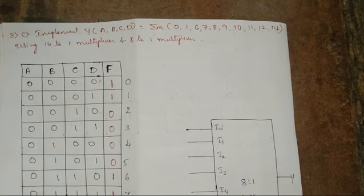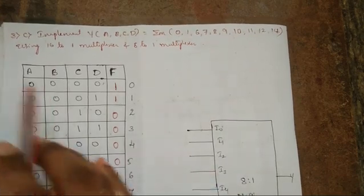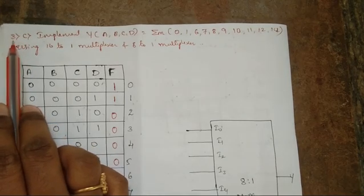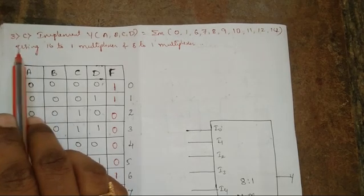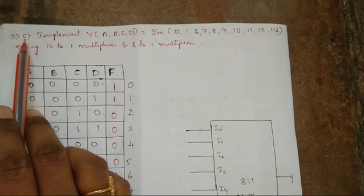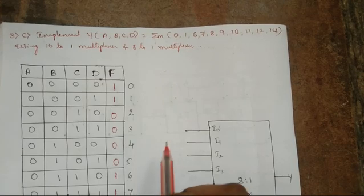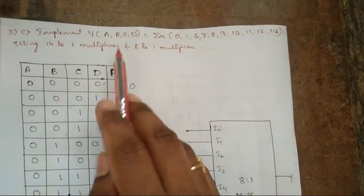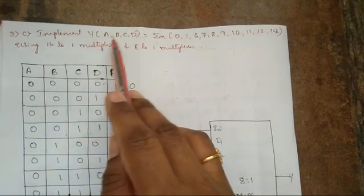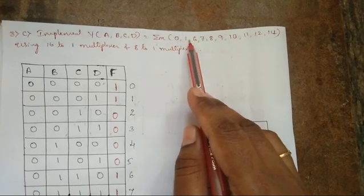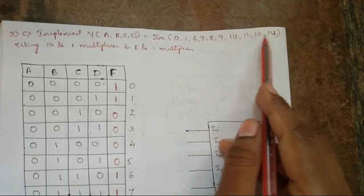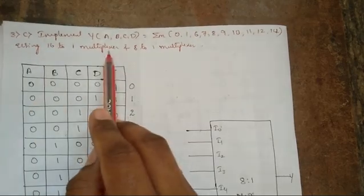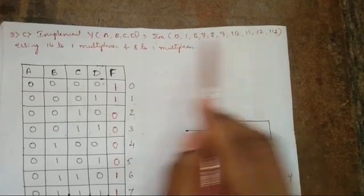Welcome to Vinuta's Math Channel. In this video I am going to solve the continuation of problem 3c. In the previous video I had explained the solution for questions 3a, 3b, and part of 3c, which has been uploaded on the official VTU website as a model question paper for subject BCS302 — Digital Design and Computer Organization. We had completed implementing Y(A,B,C,D) using a 16-to-4 multiplexer. Now we will implement the same function using an 8-to-1 multiplexer.